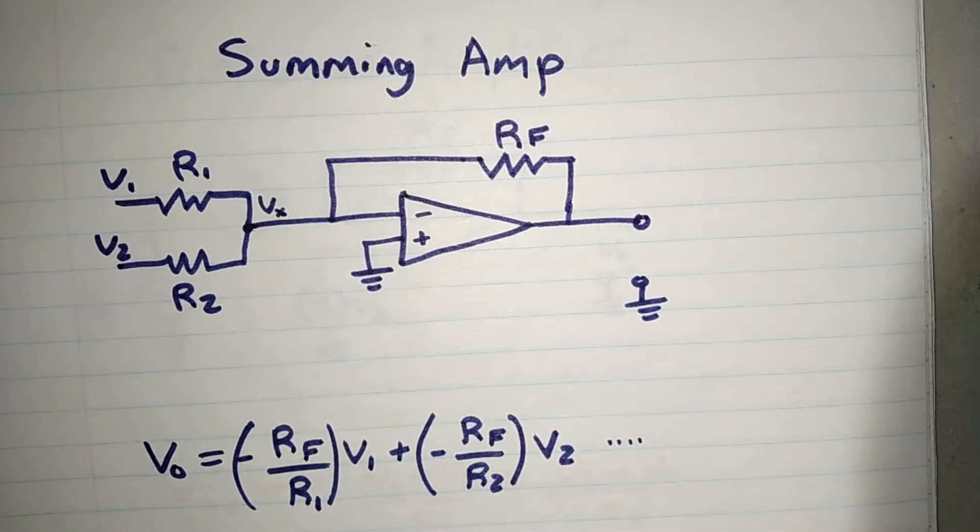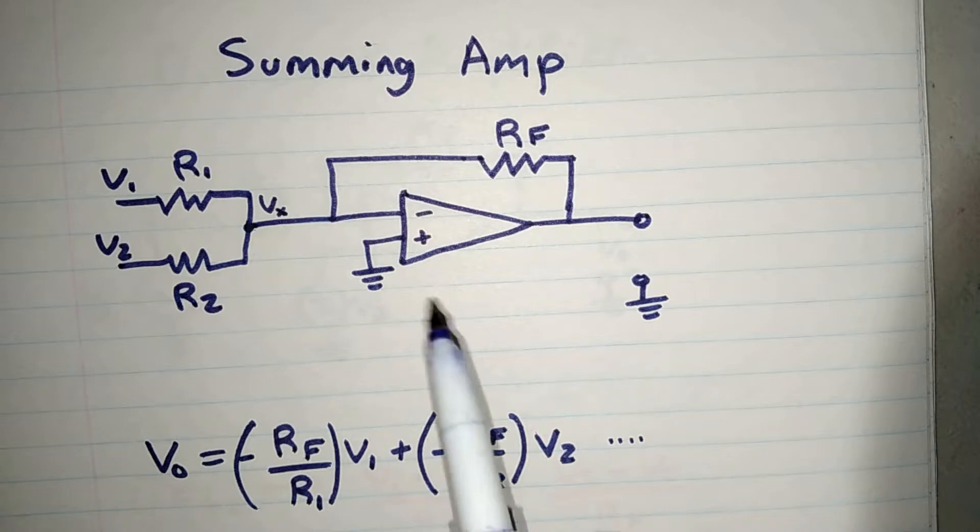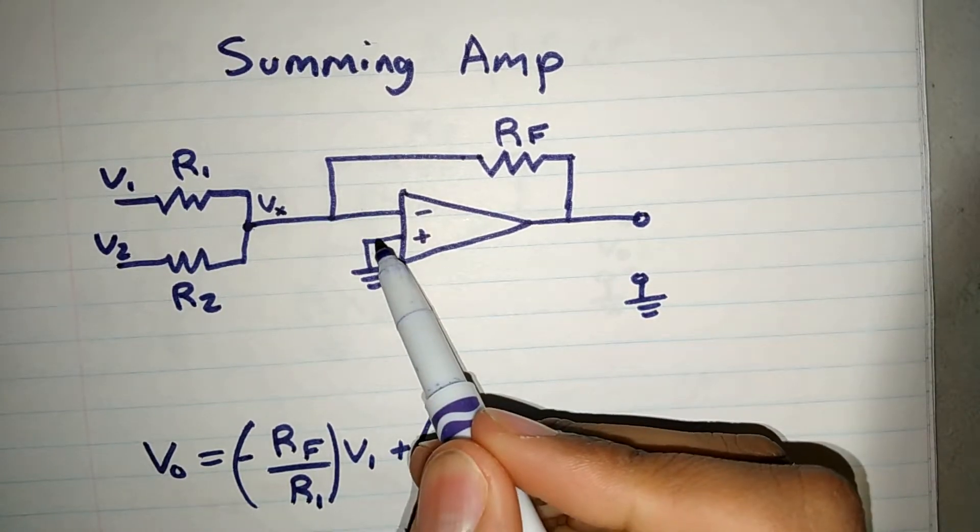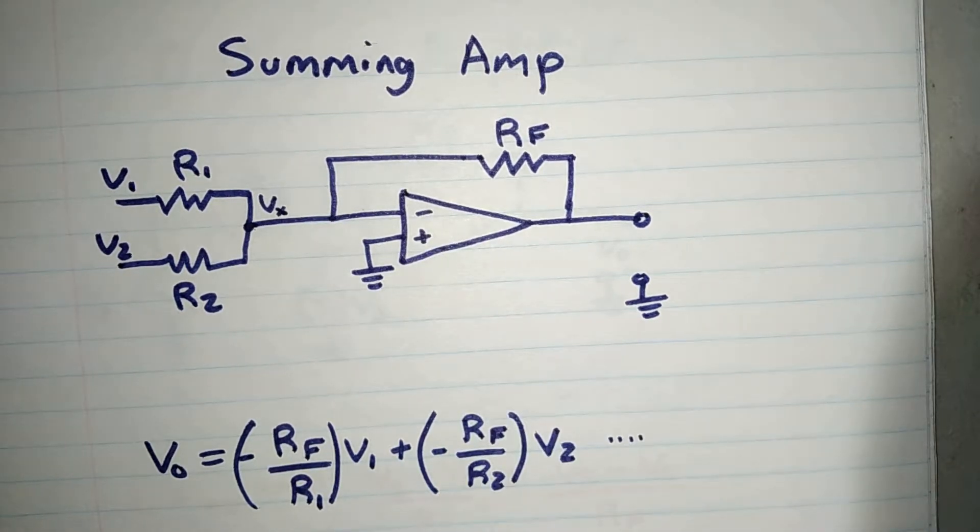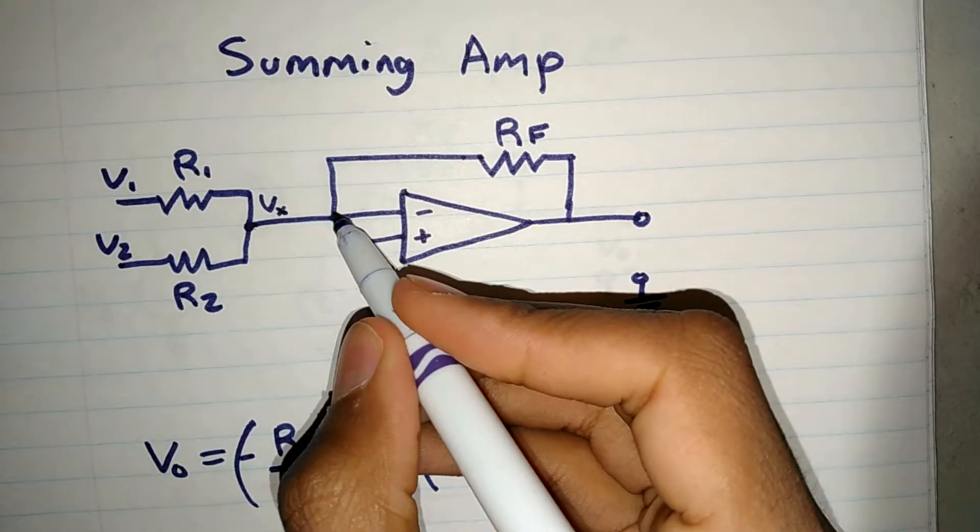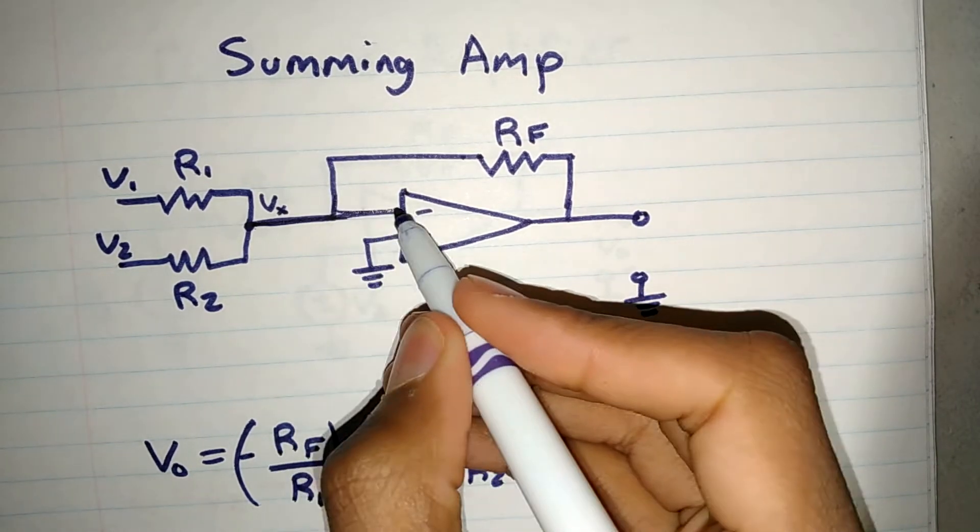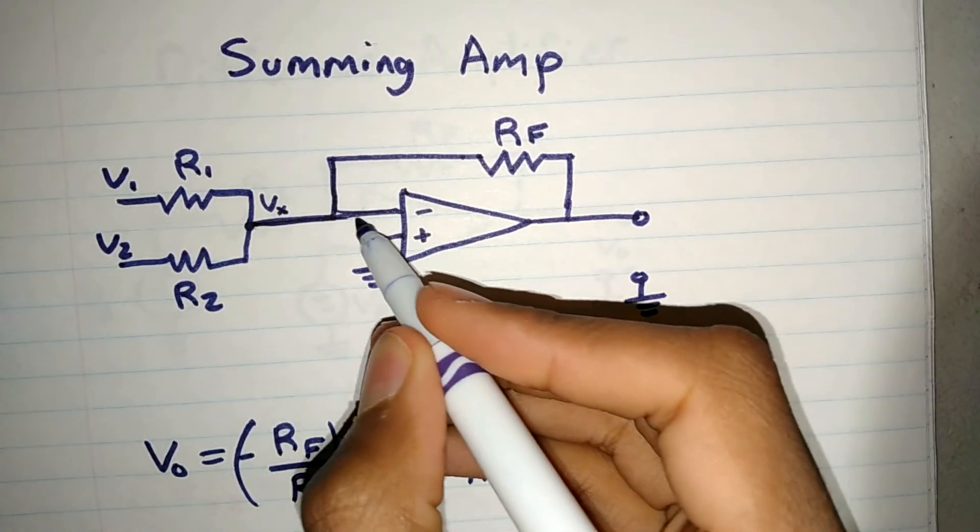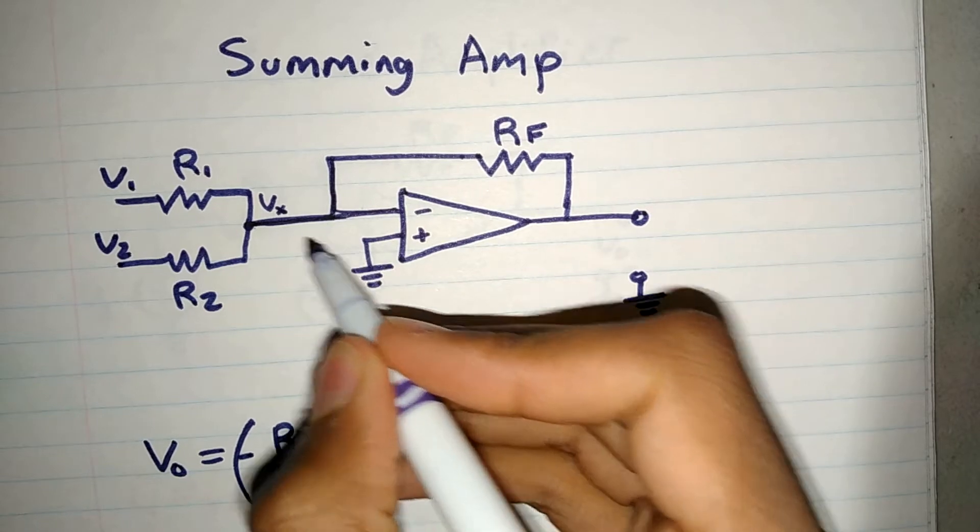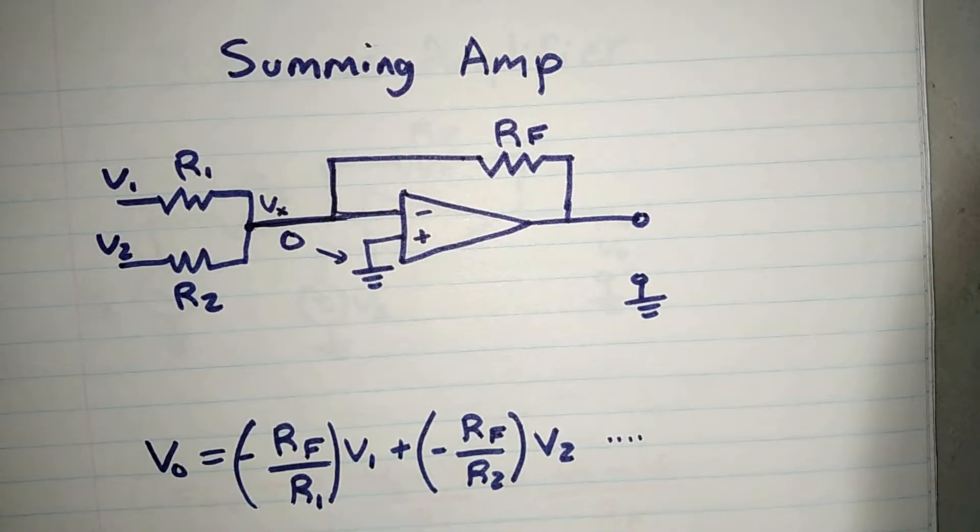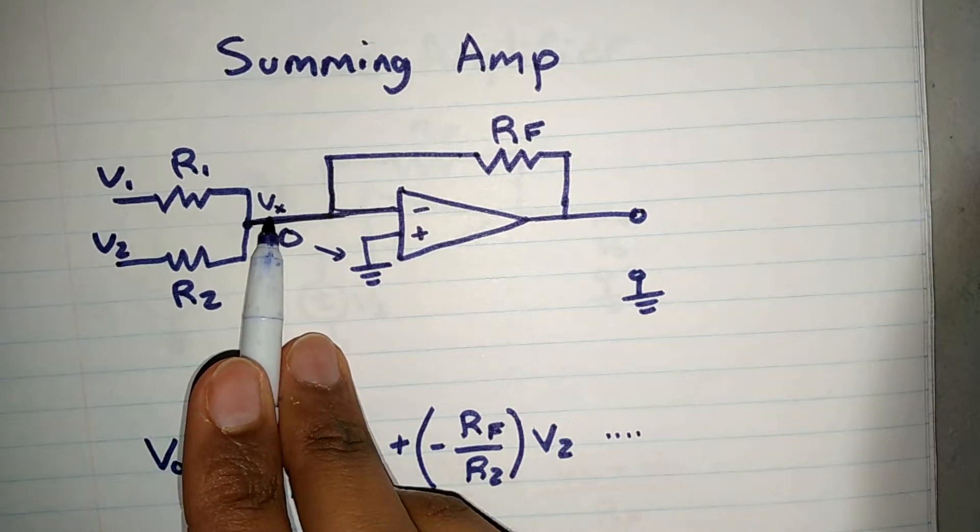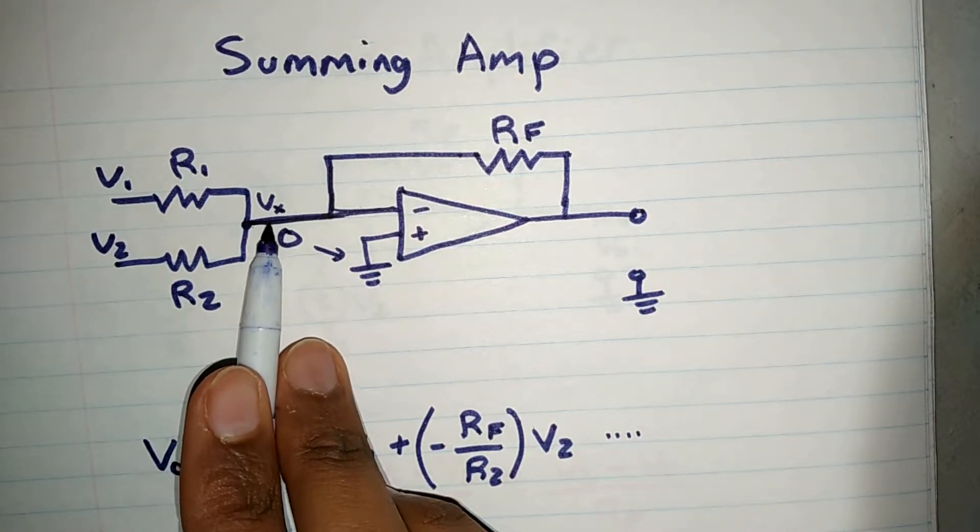Because we have multiple voltages at that input. But if you remember the second rule, the first rule being no current going through the op-amp, the second rule stating that the node voltages at the plus and minus terminal must be the same, means that this entire voltage at this huge node must be equal to zero. Because of that, Vx is zero.